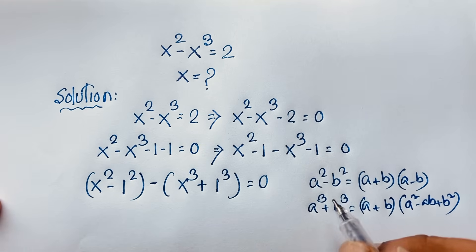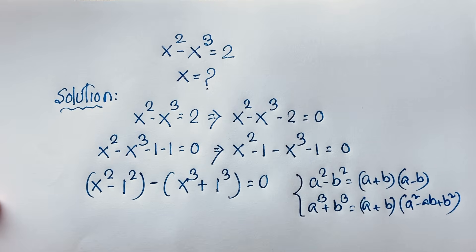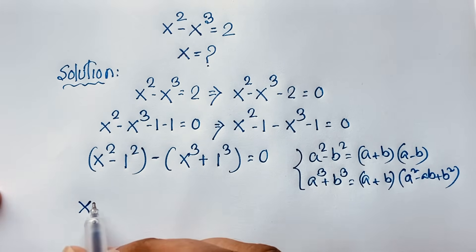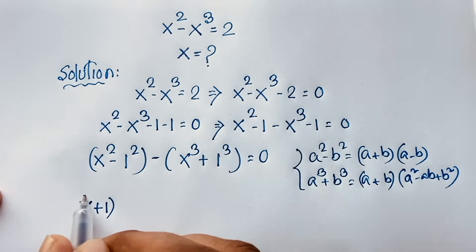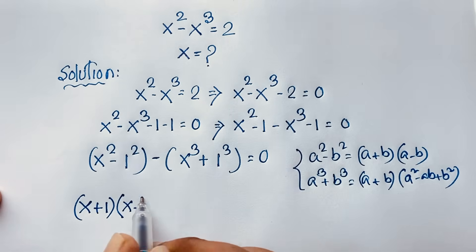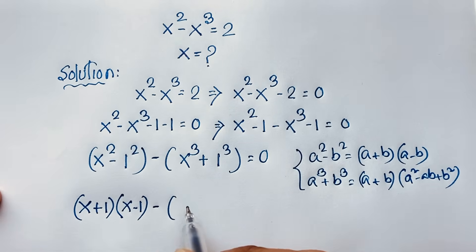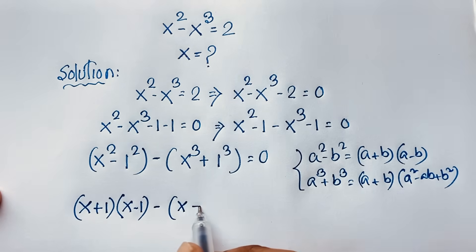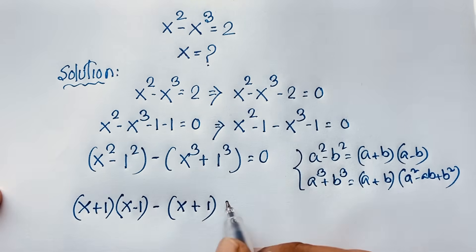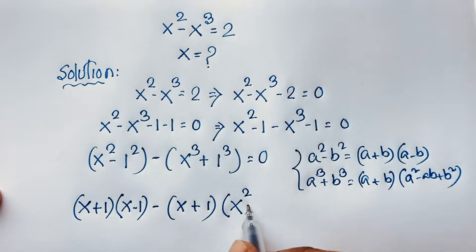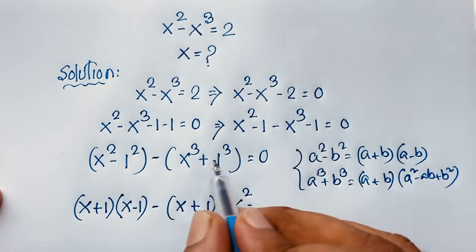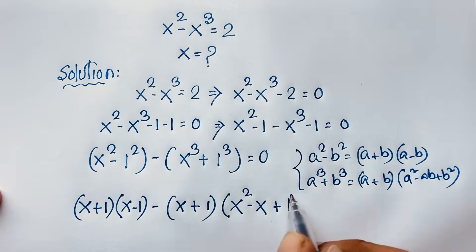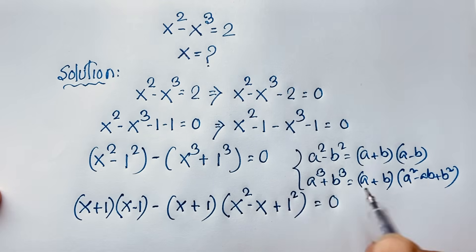Now I apply both formulas here. So it will be x plus 1 times x minus 1, minus, then for a cubed plus b cubed, a plus b — here a is x and b is 1 — times x squared minus ab. x times 1 will be x, plus b squared, meaning 1 squared — is equal to 0.